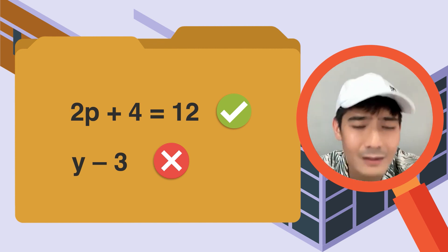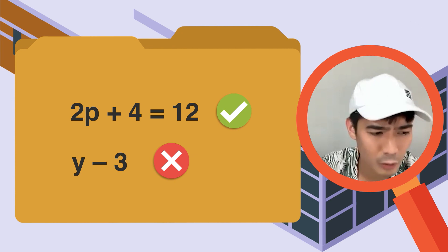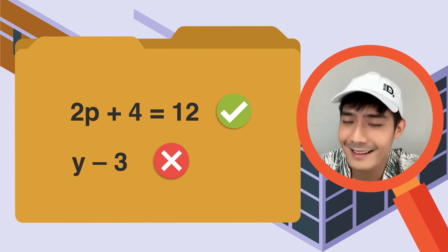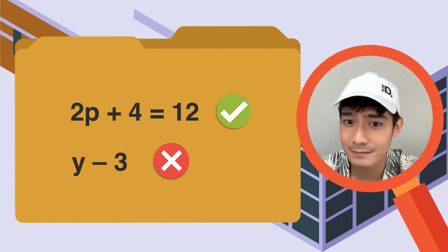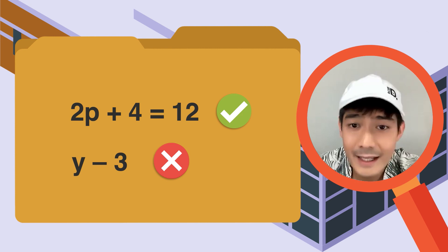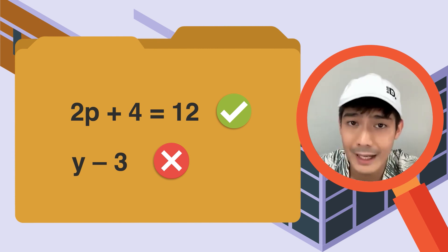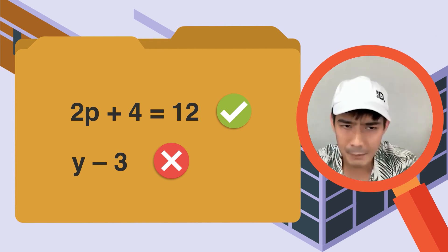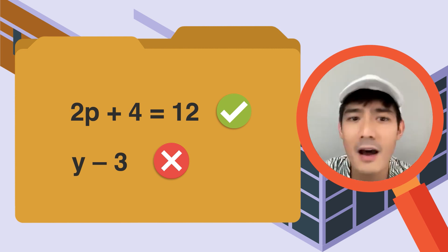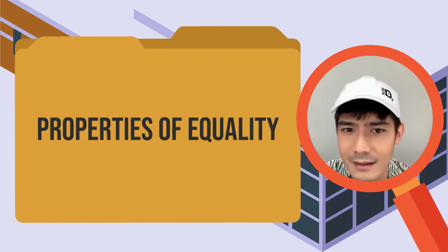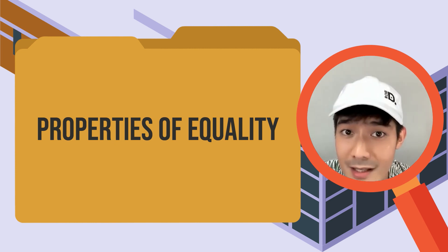Ngayon alam na natin kung ano ang isang equation. Ituturo natin kung paano mahanap ang unknown o nawawalang bahagi nito. Madalas, nire-represent ito ng x, pero pwede rin naman gumamit ng ibang letra — katulad ng p. Maraming iba't ibang diskarte sa pag-solve ng unknown, pero ang ituturo ko ay ang pag-solve gamit ang properties of equality. Bilang nagsimula pa lamang tayo sa inyong detective training, mag-focus muna tayo sa isang property.